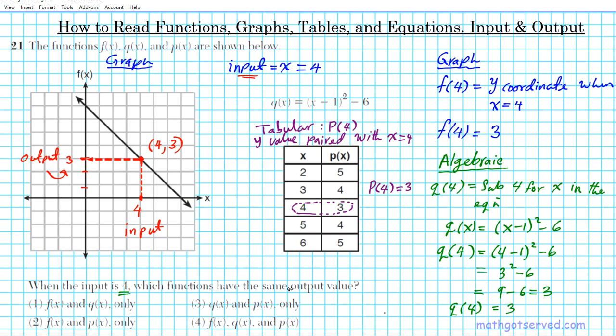So the question again says which of them have the same output value? What's your answer? For the graph, the output was 3. For the algebraic equation, the output was 3, and then for the tabular representation the output was 3 also. So guess what, the answer to question number 21 is option 4 because all three of them, f(x), q(x) and p(x), have an output value of 3 when the input is 4.